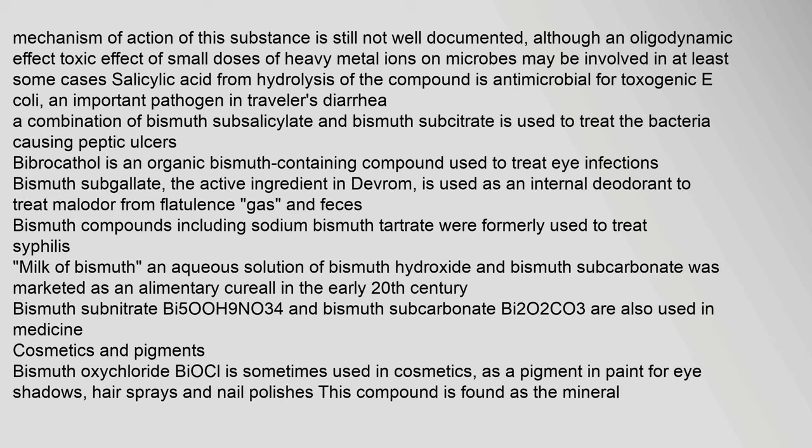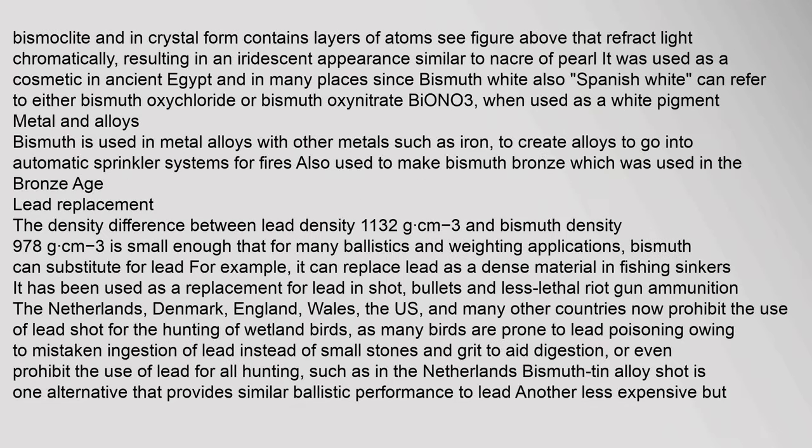Bismuth subnitrate and bismuth subcarbonate are also used in medicine. Bismuth oxychloride (BiOCl) is sometimes used in cosmetics, as a pigment in paint for eye shadows, hair sprays, and nail polishes. This compound is found as the mineral bismoclite and in crystal form contains layers of atoms that refract light chromatically, resulting in an iridescent appearance similar to nacre of pearl. It was used as a cosmetic in ancient Egypt. Bismuth white can refer to either bismuth oxychloride or bismuth oxynitrate when used as a white pigment.